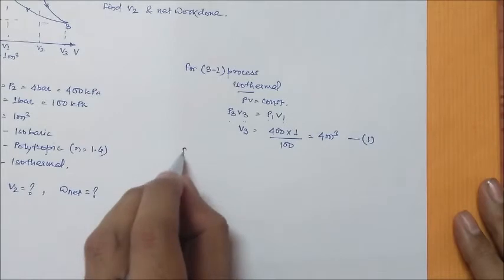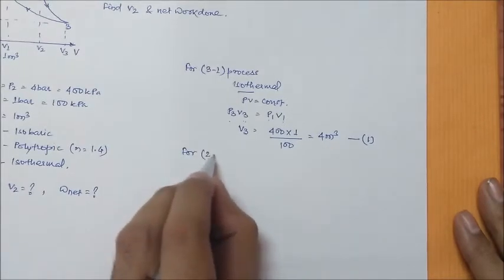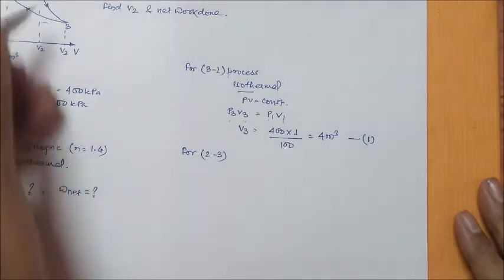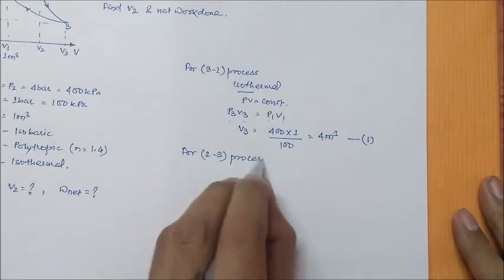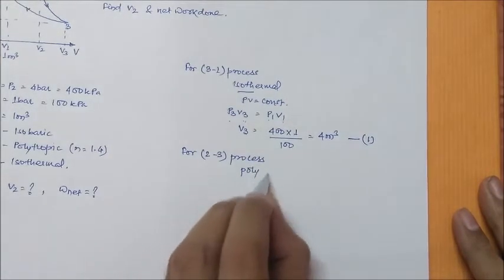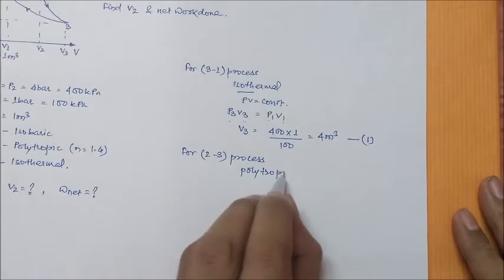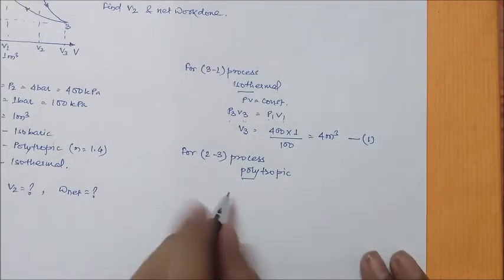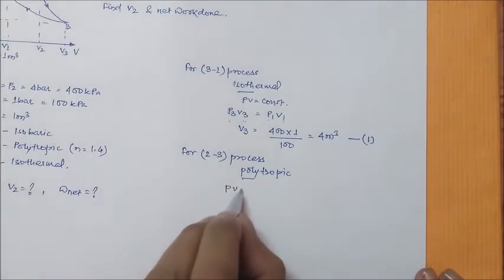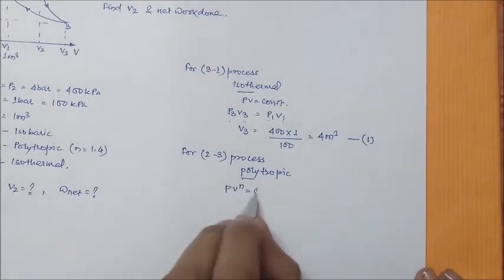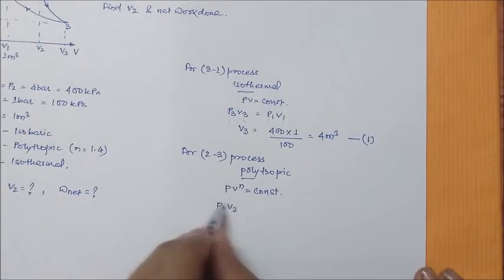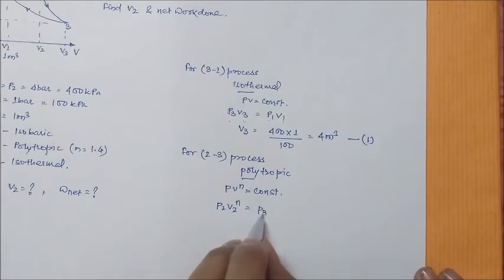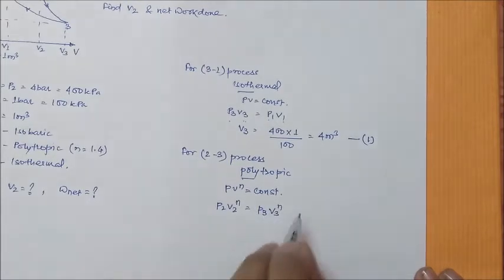Now, from process 2 to 3, that is a polytropic process. It is given in the question. So, PV to the power n is constant. P2V2 to the power n is equal to P3V3 to the power n, where value of n is 1.4.